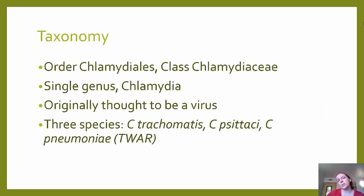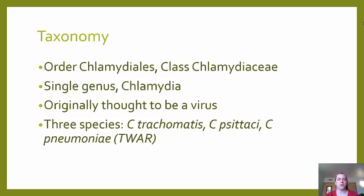Taxonomy: even though Chlamydia was originally thought to be a virus, it is in fact a bacteria of the order Chlamydiales, class Chlamydiae. There is one genus, Chlamydia, and there are three currently known species: C. psittaci, which can cause pneumonia; C. pneumoniae, also known as TWAR, which is considered a newer discovery; and C. trachomatis, which is the species being discussed today.